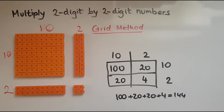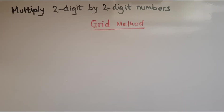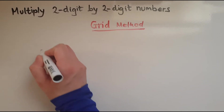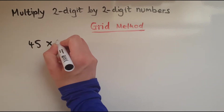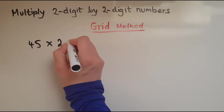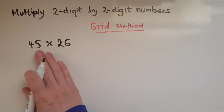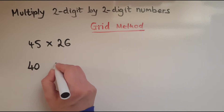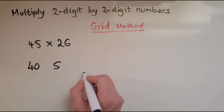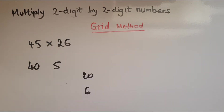So this is how you use the grid method. I'll now do a few more examples. Let's say we've got 45 times 26. So 40 and 5 will be multiplied by 20 and 6.